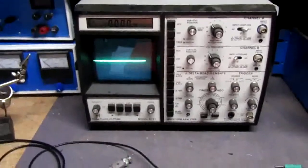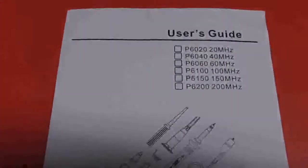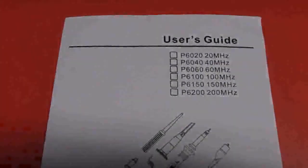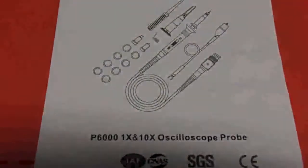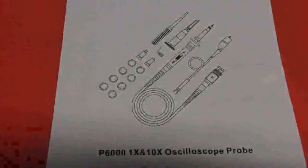So I ordered these ones off eBay. This is the P6100 100 MHz. They're about $20 for a package of two.